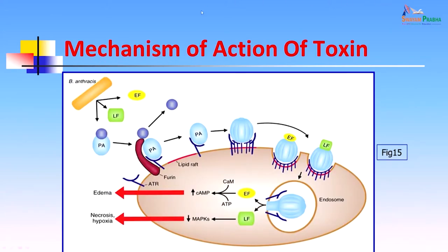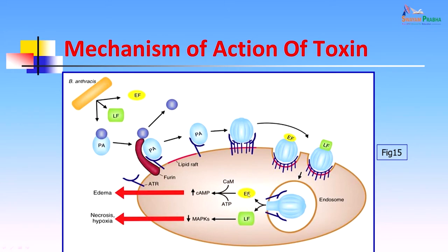This is summarized in a diagram: Bacillus anthracis produces all three factors — the protective antigen, lethal factor, and edema factor. The protective antigen binds onto receptors on the cell surface, and many of these antigens come together to form a complex. The edema factor and lethal factor attach to this complex and enter the cell, which is taken into an endosome. Once inside, the edema factor causes accumulation of cyclic AMP, causing edema and eventually cell rupture. The lethal factor causes a decrease in cellular kinases, leading to necrosis and hypoxia — both ultimately result in cell death.